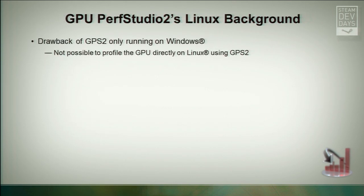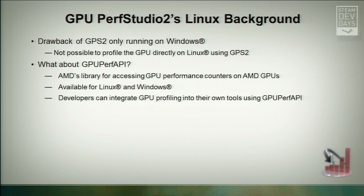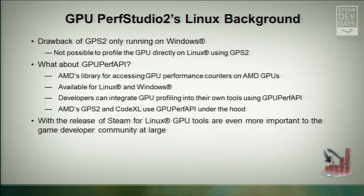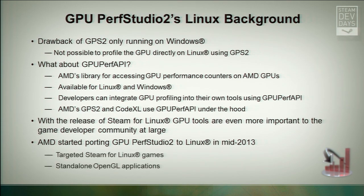The drawback of Perf Studio 2 only running on Windows was that it was not possible to profile the GPU directly on Linux. At the time, we had GPU Perf API — a low-level library that allows you to access the GPU performance counters on AMD hardware — available for Linux and also Windows. Developers can freely download this library and integrate a GPU profiler into their own tools. Perf Studio and CodeXL use this library under the hood. With the release of Steam for Linux, GPU tools became even more important. So we started to port Perf Studio to Linux in mid-2013, specifically targeting Steam for Linux games and standalone OpenGL applications.